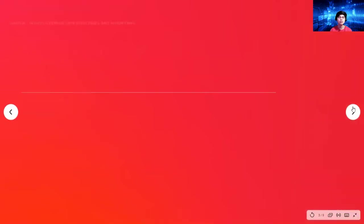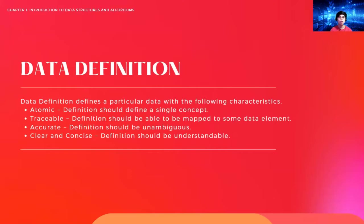Let's move on to the data definition. A data definition defines a particular data with the following characteristics. First, it should be atomic — data should be defined in a single concept. It should also be traceable, meaning it should be mapped to some data element. And your data should be accurate — it should be unambiguous.